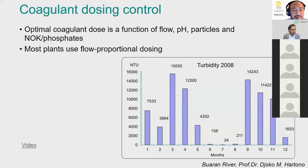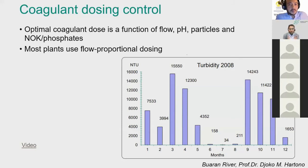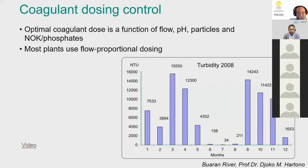The lecture resumes with the professor presenting a slide on coagulant dosing control. The optimal coagulant dose is a function of flow, pH, particles, natural organic matter, and phosphates.